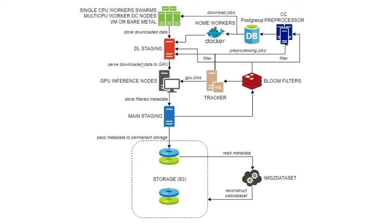Here is how we built everything: we parsed the HTML data, extracted all image links that had alternative text, and shuffled them. Then we downloaded the shuffled links to a staging server. We sent the results to inference nodes with GPUs where we calculated the CLIP embeddings and cosine similarities, then saved all the metadata on a temporary staging server before moving it to S3 long-term storage.